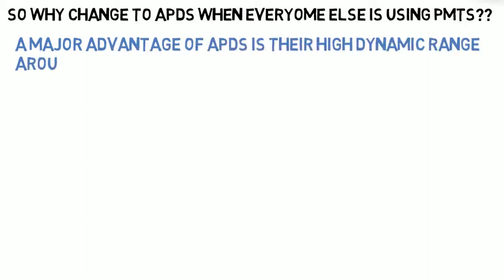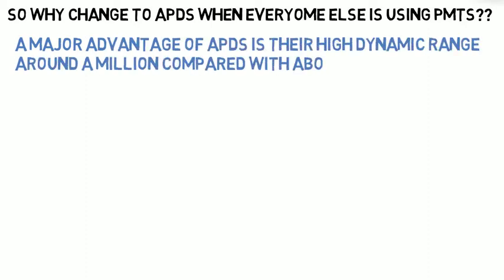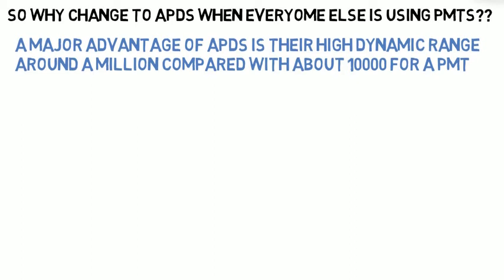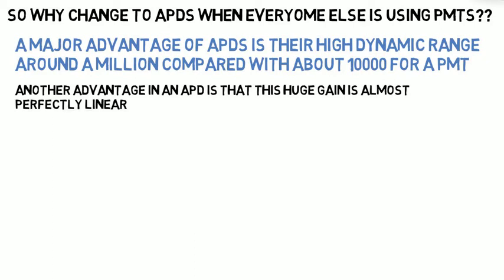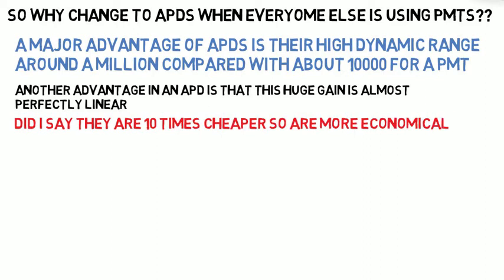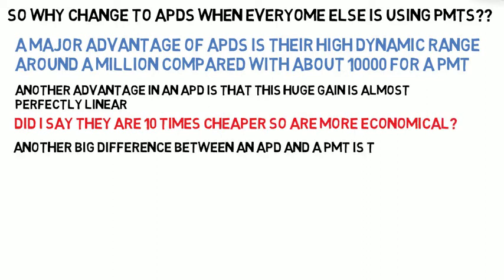A major advantage of APDs is the high dynamic range — around a million — compared with about 10,000 for a PMT. Another advantage is that this huge gain is almost perfectly linear. And they're 10 times cheaper than PMTs.